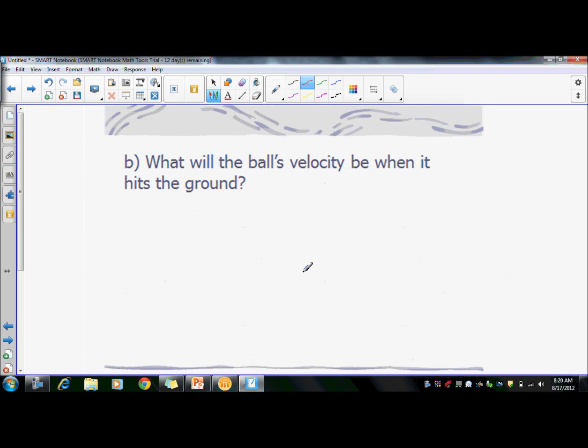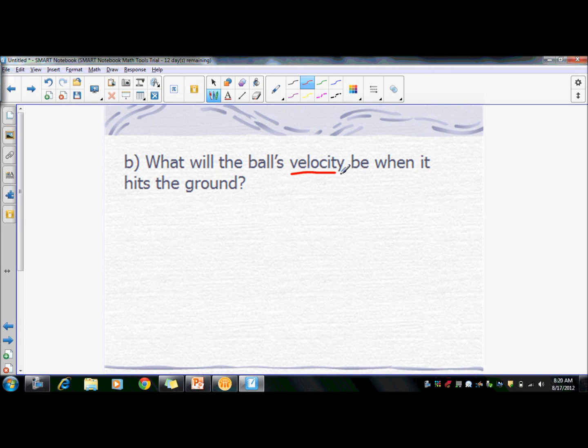All right, so as a continuation, we want to know what will the ball's velocity be when it hits the ground. So we want to know what is its final velocity when it hits the ground. It is not zero. If a ball hits the ground at zero, it would not bounce. It would not create an indentation.